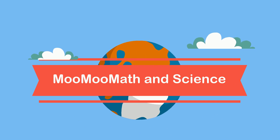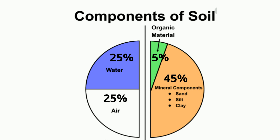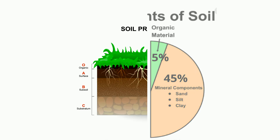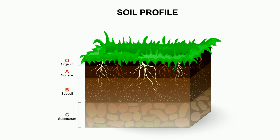If you look at a chart of soil, you'll see that it is made up of 45% minerals, 5% organic matter like decaying plants and animals, 25% water, and 25% air. You can also study soil by looking at its profile and the soil horizon.